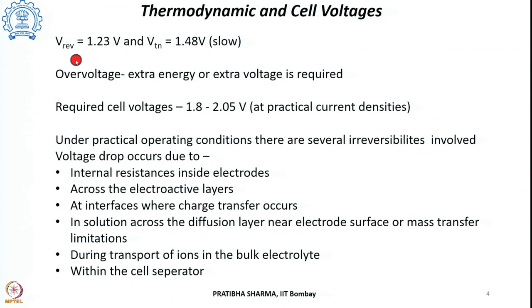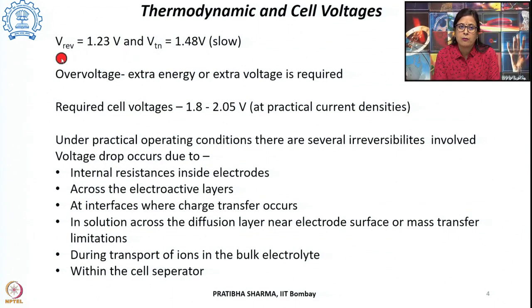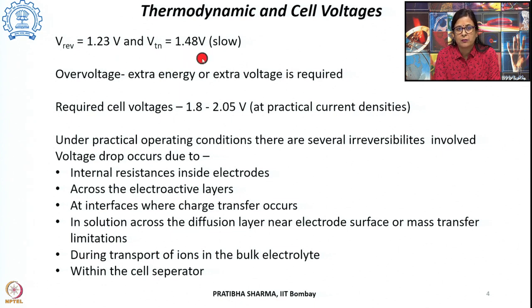We have also seen in the last class that the minimum required voltage for electrolysis to take place, V reversible, is 1.23 volts. In this voltage the various reacting species are in gaseous form, so water is present as water vapor. When the energy required for converting into water vapor also comes from the electrical energy and the process is isothermal, this is known as the thermoneutral voltage, which has a value of 1.48 volts.